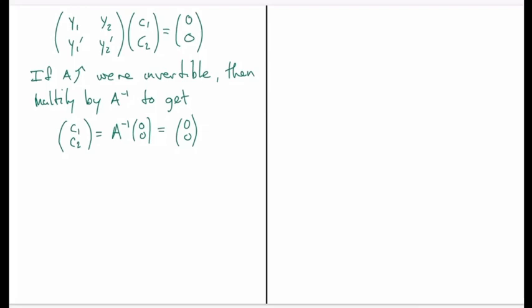And so what this says is that if A is invertible then c1 and c2 have to be equal to 0. But we know that's not true so that means that A cannot be invertible and a non-invertible matrix has determinant 0.